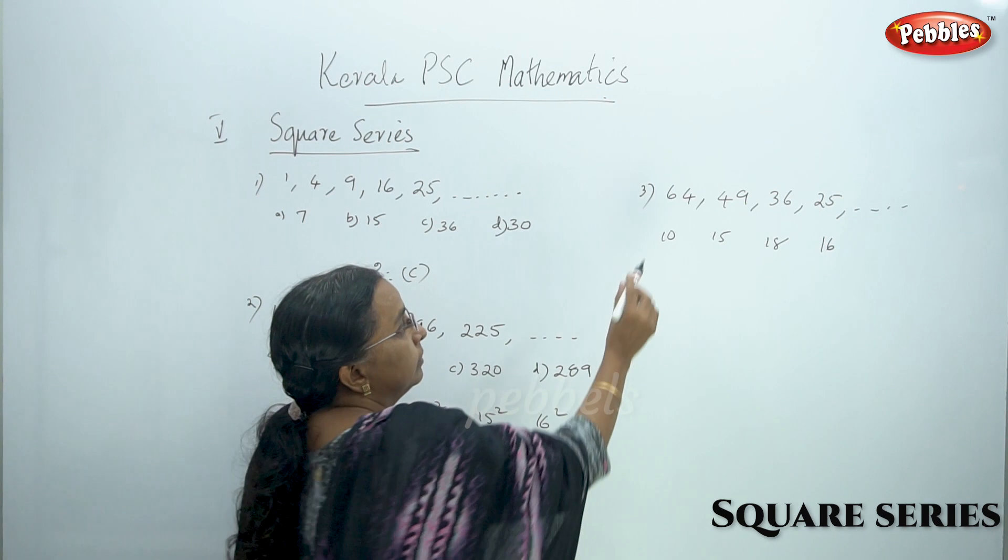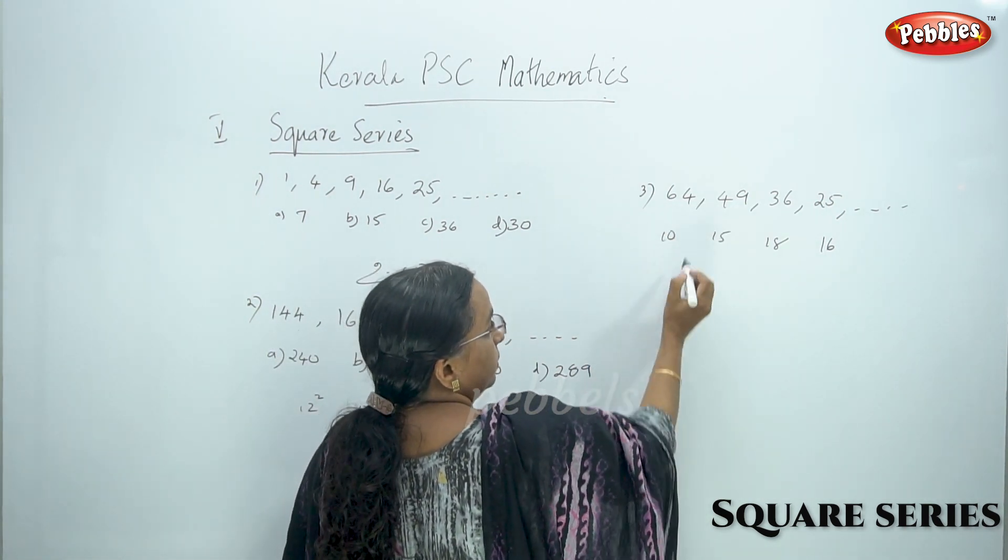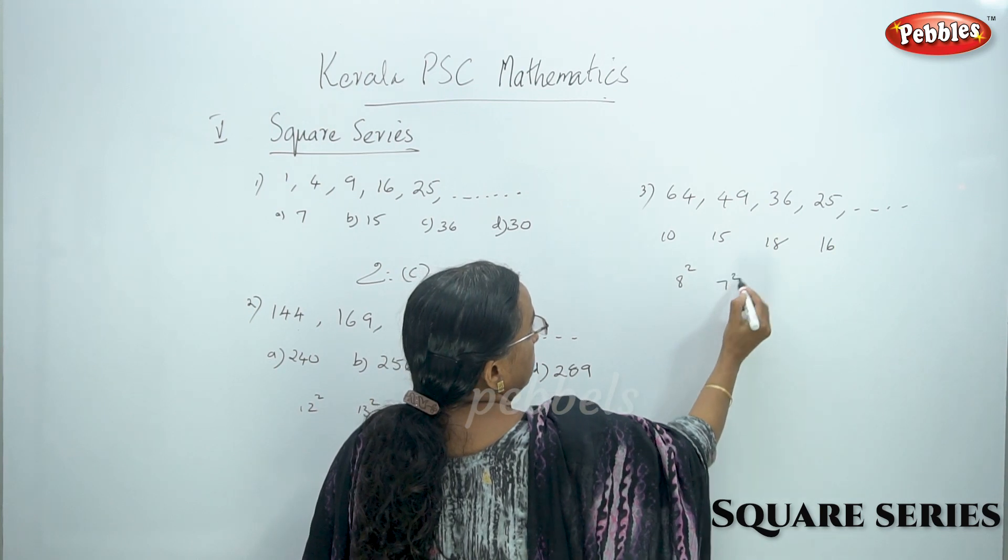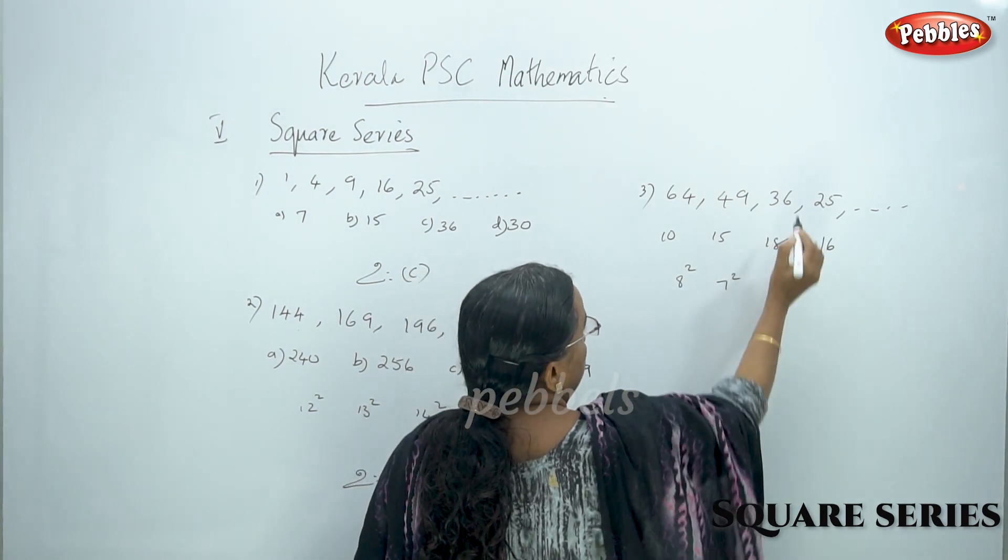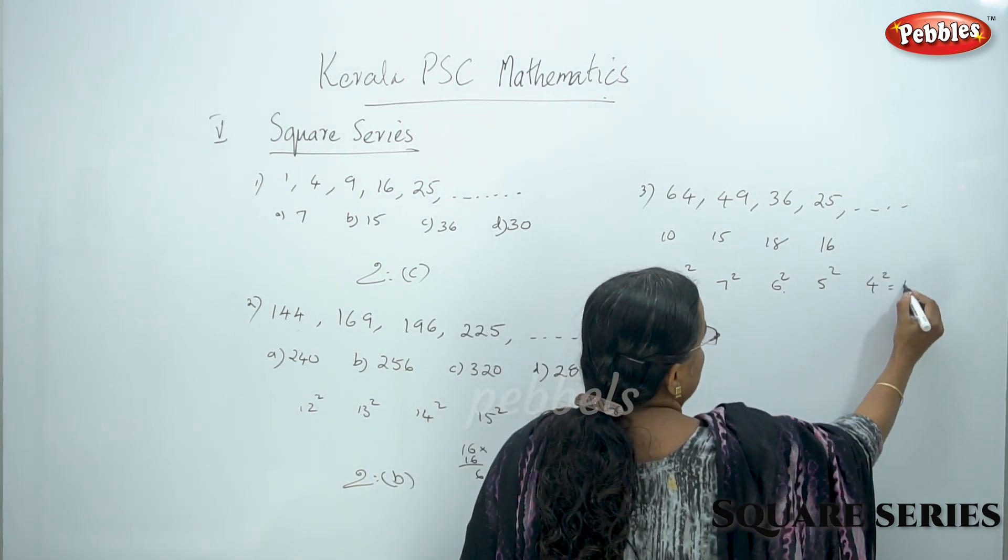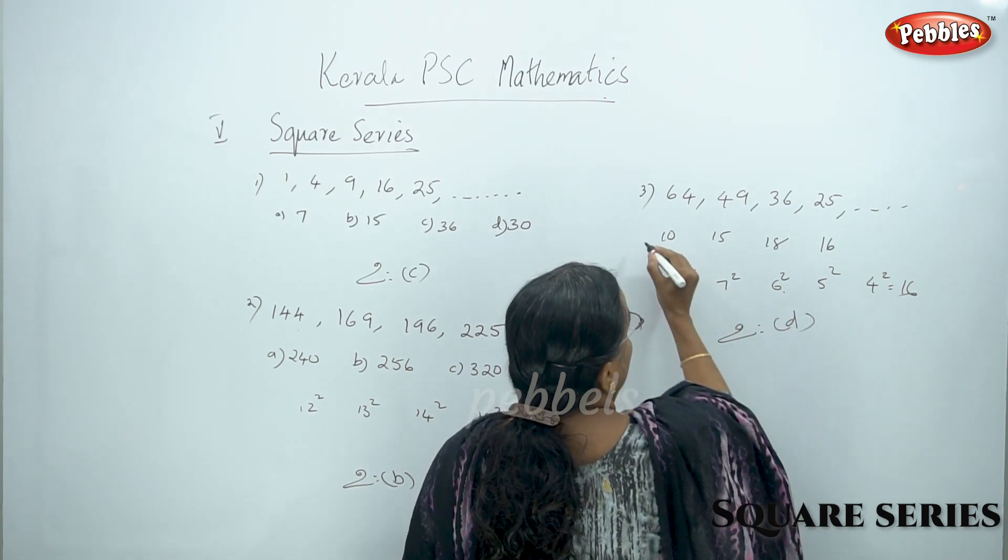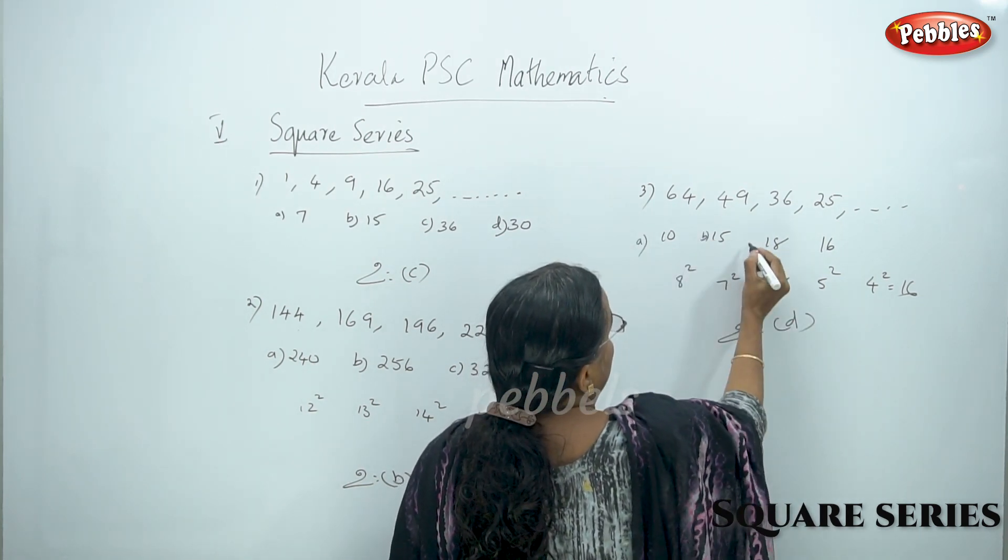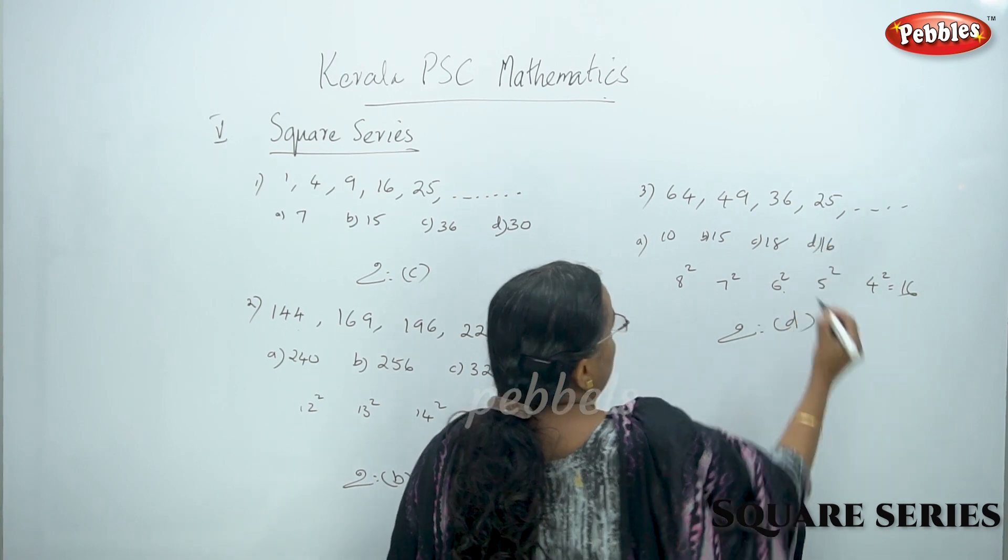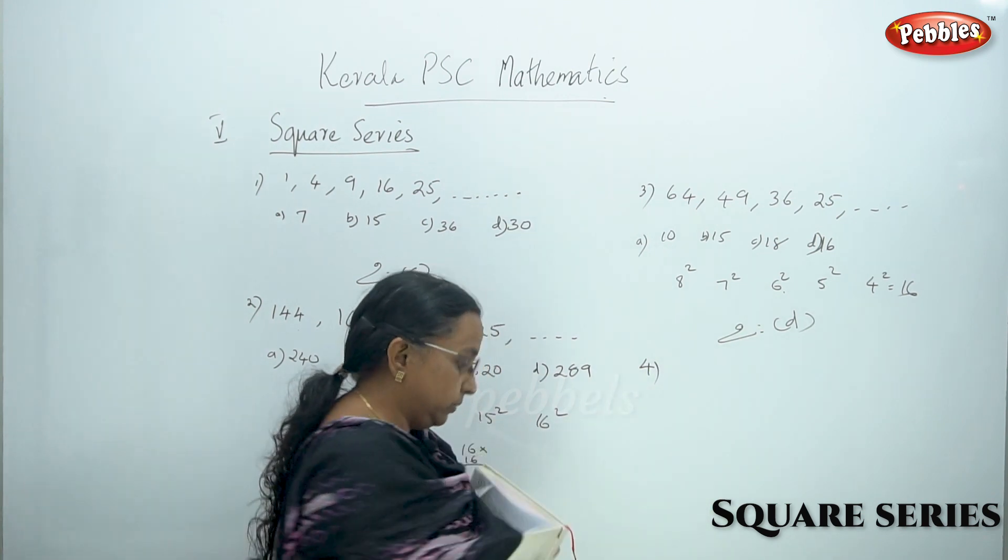This is 64 - 8 square. Then 6 square. 25 is 5 square. 4 square. We will tell the options here. This is option A, B, C, D. This is 4 options. This is D option. This is 4 questions.